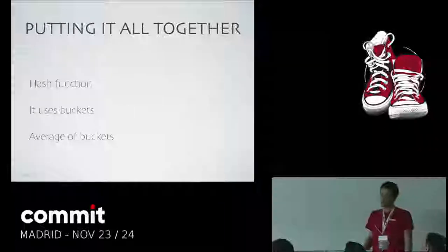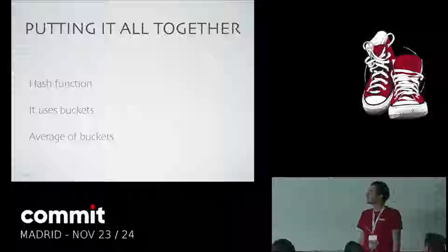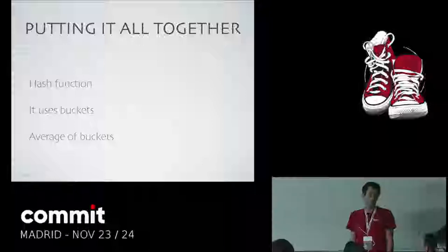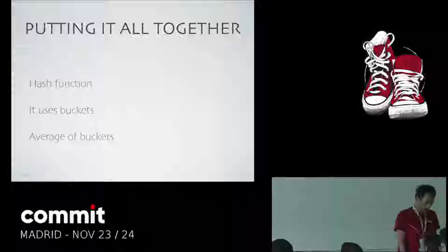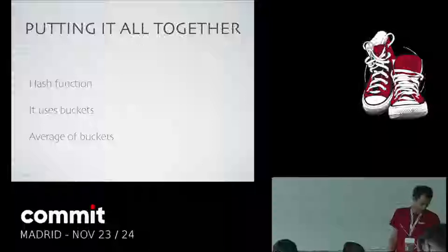At the end, having many buckets, you do a kind of average — a harmonic mean of all the buckets. That final number is the answer: the cardinality of the set. It's a very simple concept; the math involved is a bit more complicated, but it solves a quite complicated problem — the cardinality of really big data sets.